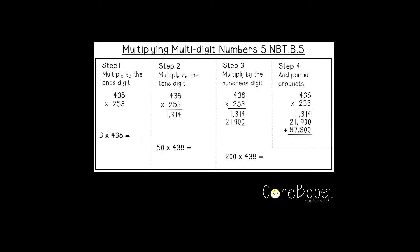For our example, I'll break it down into steps. Step one: multiply by the ones digit. Make sure your numbers are aligned by place value, right on top of each other, so you don't get confused. Start with the three in your ones place and multiply it by 438.